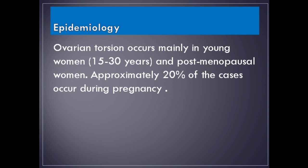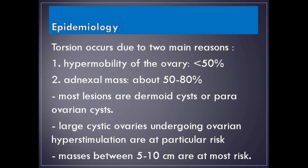Epidemiology. Ovarian torsion occurs mainly in young women aged 15 to 30 years and postmenopausal women. Approximately 20% of cases occur during pregnancy. Torsion occurs due to two main reasons: hypermobility of the ovary in less than 50% of cases, and an adnexal mass in about 50 to 80%. Most lesions are dermoid cysts or para-ovarian cysts. Large cystic ovaries undergoing ovarian hyperstimulation are at particular risk. Masses between 5 to 10 cm are at most risk.